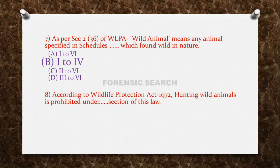Question 8: According to the Wildlife Protection Act 1972, hunting wild animals is prohibited under which section? Option A: Section 9, Option B: Section 13, Option C: Section 17, Option D: Section 30. The correct answer is Option A — under Section 9, hunting of animals is prohibited under the Wildlife Protection Act.